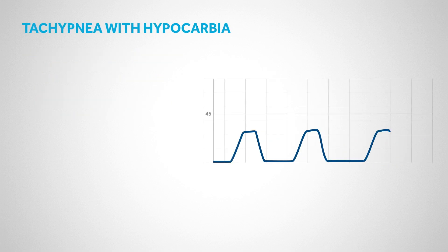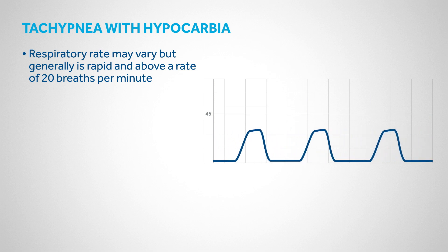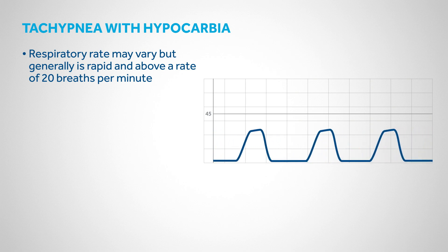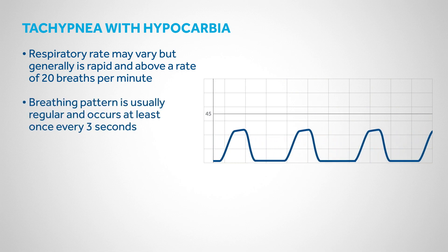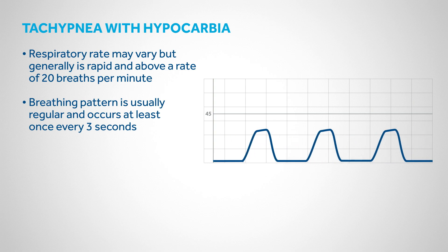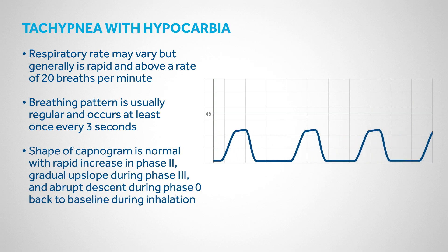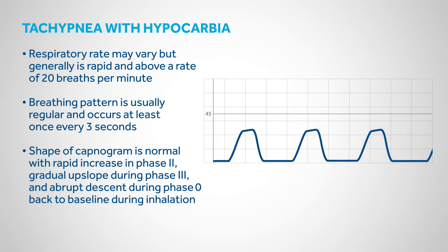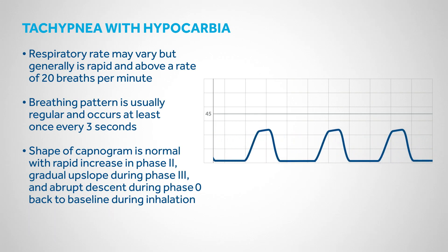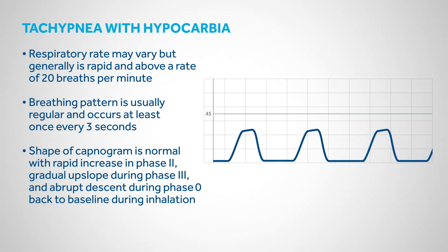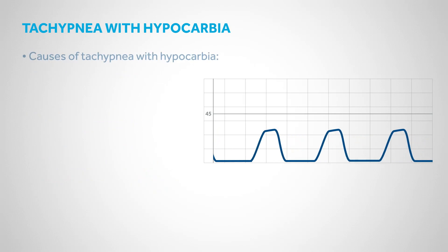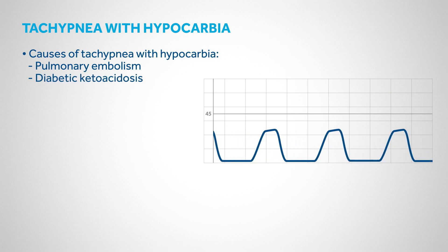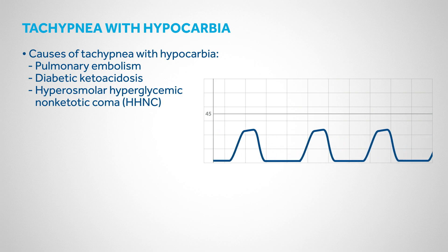In tachypnea — abnormally rapid breathing — with hypocarbia (reduced CO2), respiratory rate is generally rapid and above 20 breaths per minute. The breathing pattern is usually regular, occurring at least once every 3 seconds. The capnogram morphology is normal with rapid increase in Phase 2, gradual and smooth upslope during Phase 3, and abrupt descent during Phase 0 back to baseline. End-tidal CO2 levels are generally lower than normal. Possible causes include pulmonary embolism, diabetic ketoacidosis, hyperosmolar hyperglycemic non-ketotic coma, or pain.